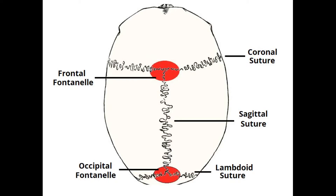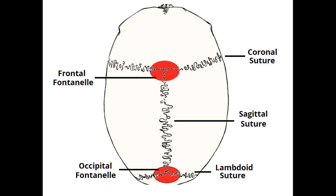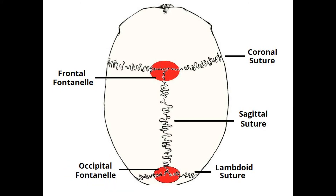The point where the sagittal suture meets the coronal suture is known as the anterior or frontal fontanelle. The point where the sagittal suture meets the lambdoid suture is known as the posterior or occipital fontanelle. They are also known as bregma and lambda respectively.